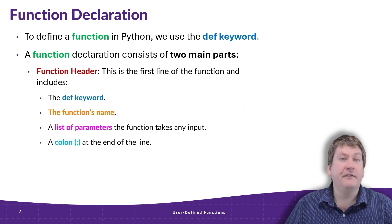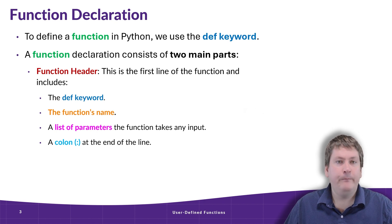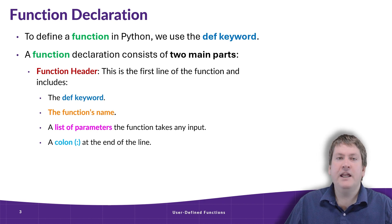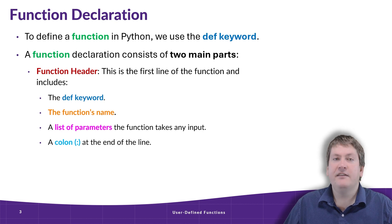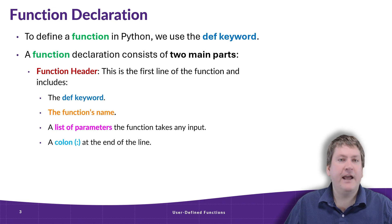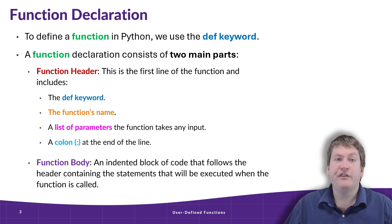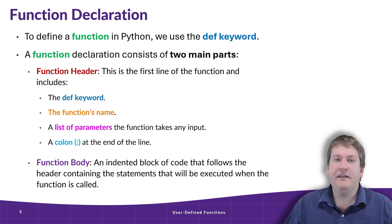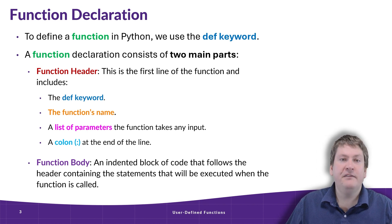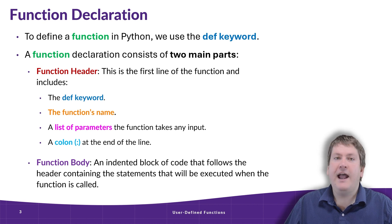A function header starts with the define keyword, followed by the function's name. This name has to follow the same naming rules that we use for variables. Then a list of parameters in parentheses — these are the inputs the function is going to take. This list could be zero or more parameters. At the end of the function header, we have a colon that represents the end of the line, and that is followed by the function's body, which is an indented block of code containing all the statements executed when the function is called. It's similar to what we've seen with if statements and loops.